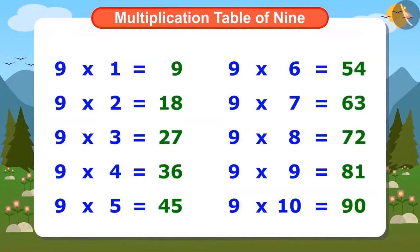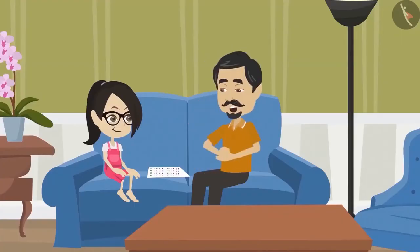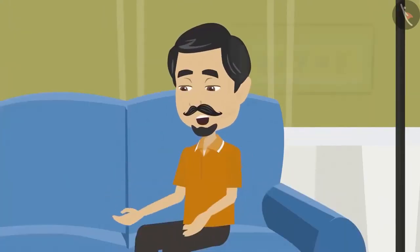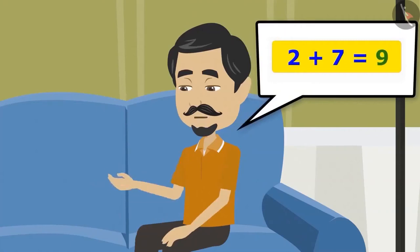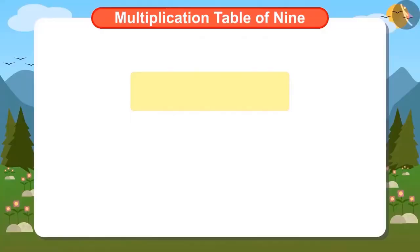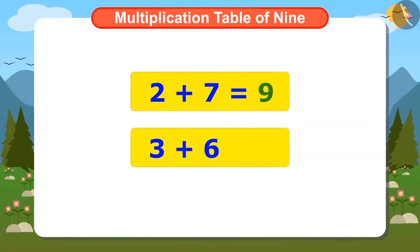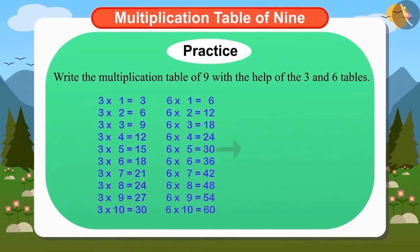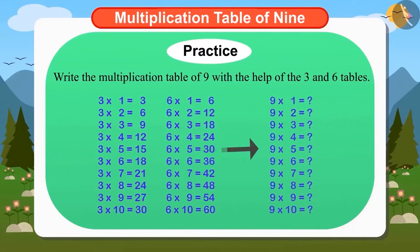First I wrote the table of two small numbers 2 and 7, from which I found the table of 9, and then I found out the answer. Oh wow Vandana! You have become very intelligent. But do you know, apart from 2 and 7, you can find the 9's table with 3 and 6. See, like adding 2 and 7 gives the answer 9, similarly adding 3 and 6 gives the answer 9. Can you try writing the table of 9 from 3 and 6?